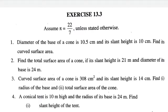r is the radius of the base of the cone. Come to question number one: diameter of the base of the cone is 10.5 centimeter and its slant height is 10 centimeter. Whenever height is given, check carefully whether it is slant height or simple height. If slant height is given, we can easily find curved surface area. But if simple height is given, then we must first find the slant height. Here slant height is given, and it says find its curved surface area.